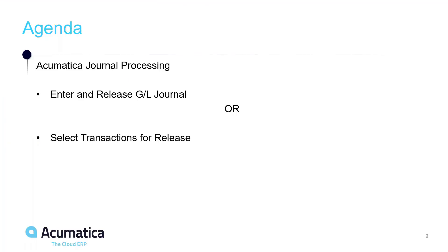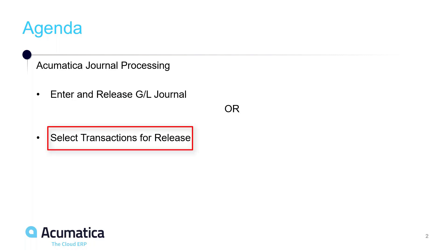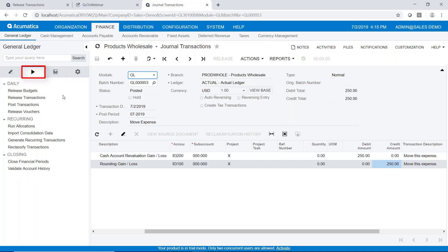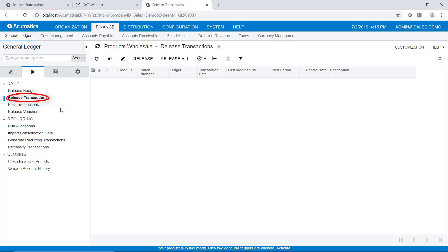Here we are back on our agenda and we've entered and released that general ledger journal. Now I'm going to show you how to release multiple transactions all at once. If you want to do a bunch of data entry and then release them all at once instead of releasing them one at a time, you certainly can do that. Here we are back in Acumatica — still in general ledger. This time I'm going to go to the processing tab and click on the option to release transactions.